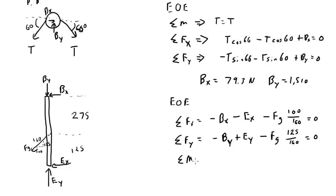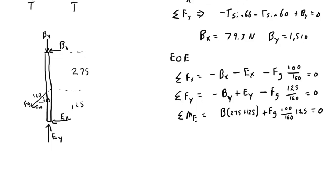And then we can do the moments, and let's do the moments around E. So BY creates no moment around E. BX, on the other hand, BX times 275 plus 125 creates a positive moment around E. And then the X component of FG, FG times 100 over 160 times this distance, 125. This distance right here, 125, also creates a positive moment.